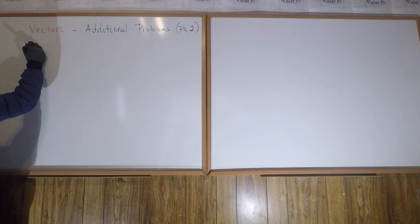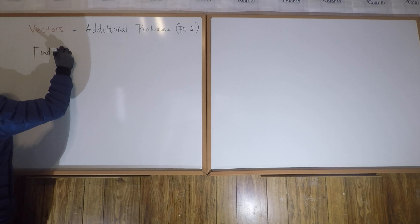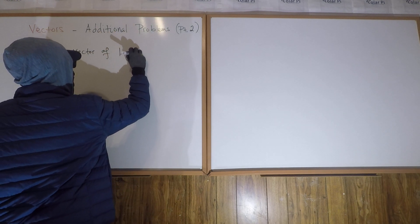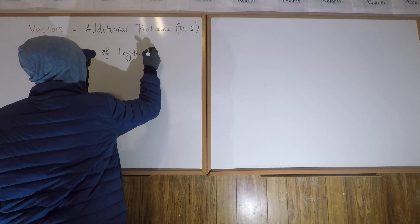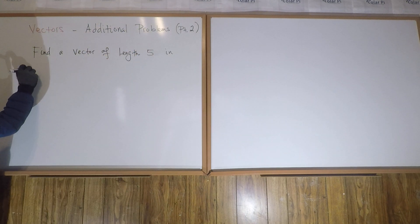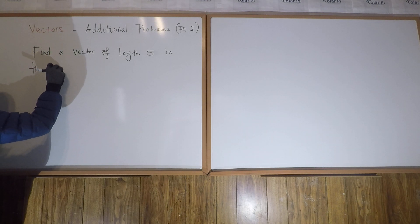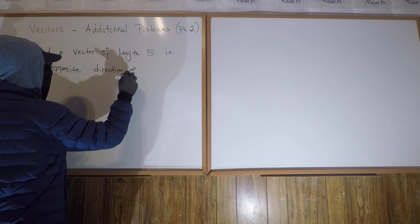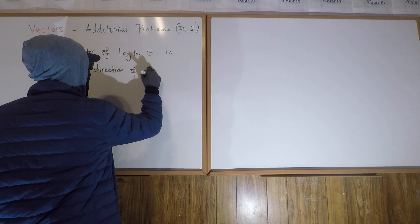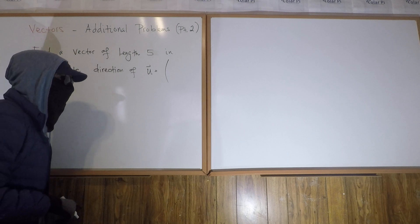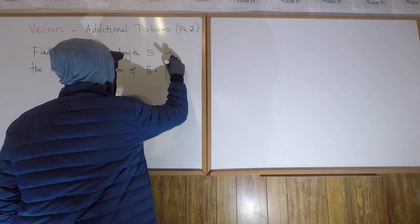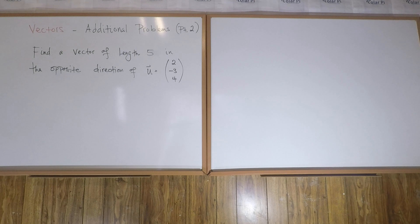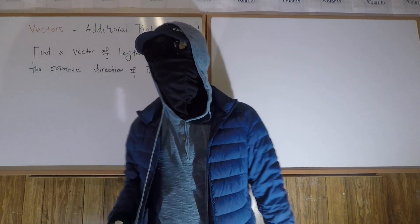So what we have to do is find a vector of length five in the opposite direction of this vector.